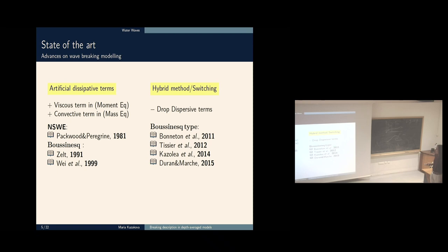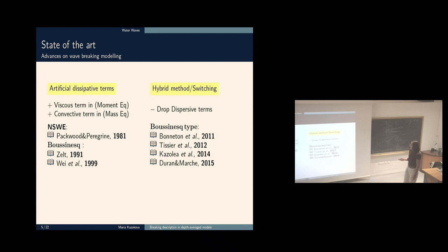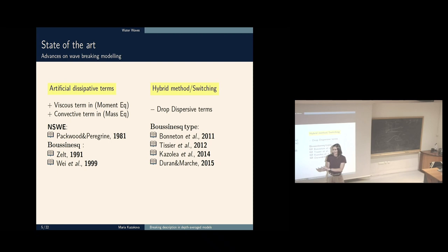The other method — more recent — is the hybrid or switching method. The idea is to drop dispersive terms when you decide to, switching from the Green-Naghdi model, which propagates nicely as a solitary wave, to the non-linear shallow water equation at some point. This develops a shock solution describing breaking waves. At the beginning we solve Green-Naghdi, and when we decide where breaking occurs we switch to non-linear shallow water; it develops a shock and gives good agreement with experiment.